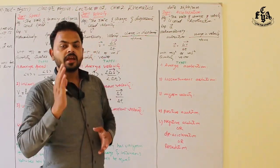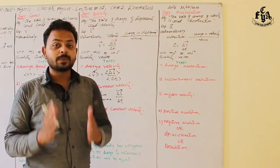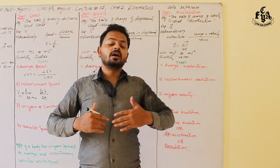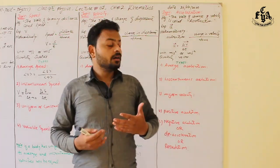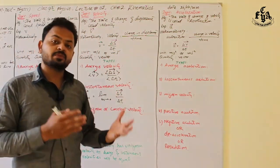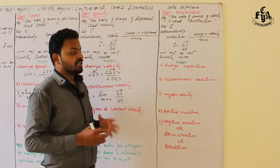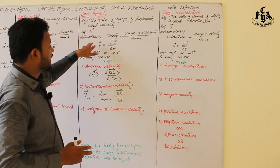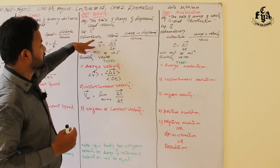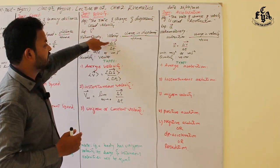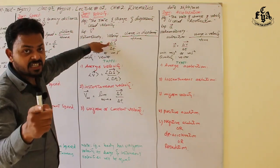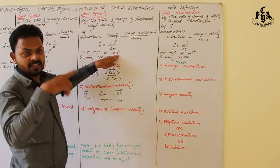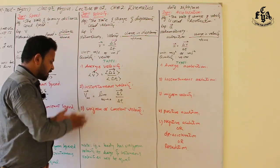Velocity is defined as the rate of change of displacement. In other words, it is the change in displacement that occurs in unit time. Velocity is represented by V with an arrow — it is a vector quantity. Mathematically, V⃗ = Δs/Δt, where Δ represents a small observable change. Its unit is meter per second or ms⁻¹.